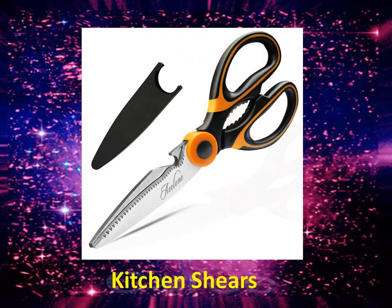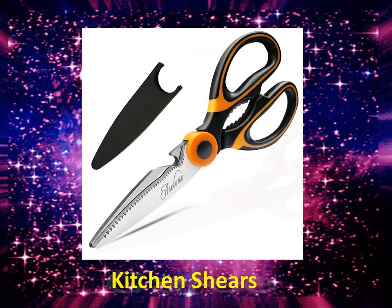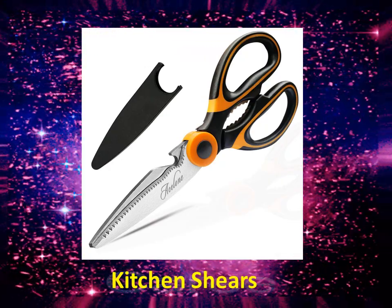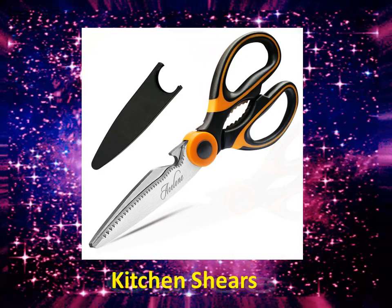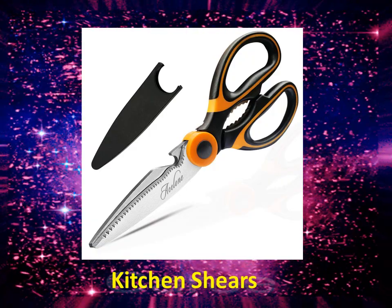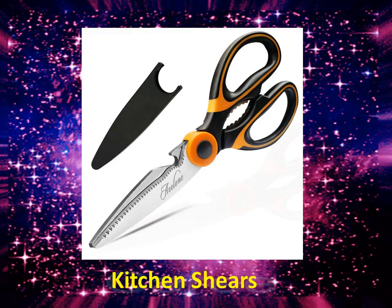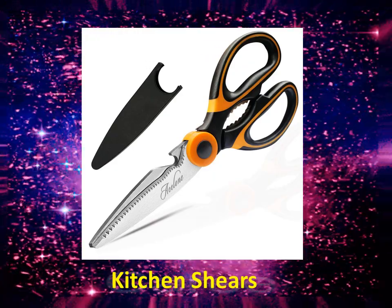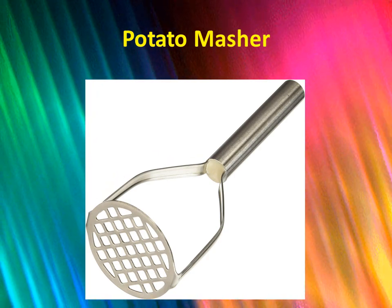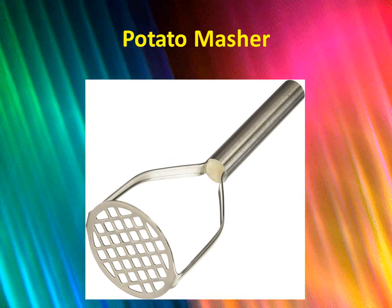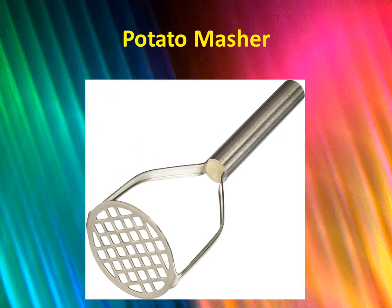Next we have kitchen shears. They are practical for opening food packages, cutting tape or string, or simply removing labels or tags from items. They are also used to cut lightweight or thin ingredients. Next we have a potato masher. A potato masher is used for mashing cooked potatoes, turnips, carrots, or other soft cooked vegetables.